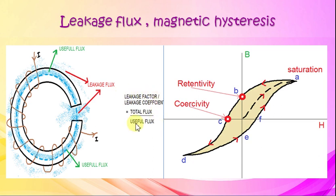Magnetic Hysteresis. The phenomenon of flux density B lagging behind the magnetizing force H in a magnetic material is known as Magnetic Hysteresis.